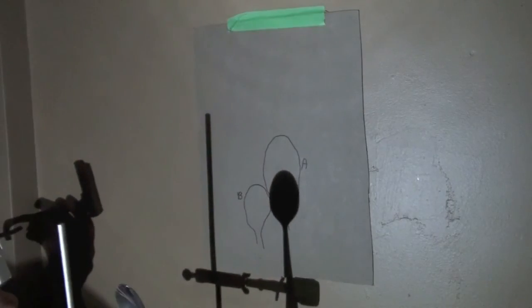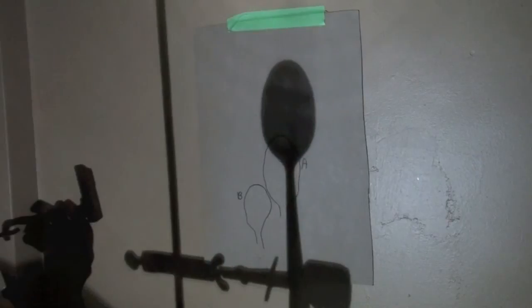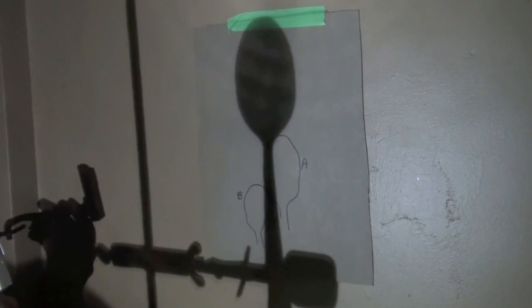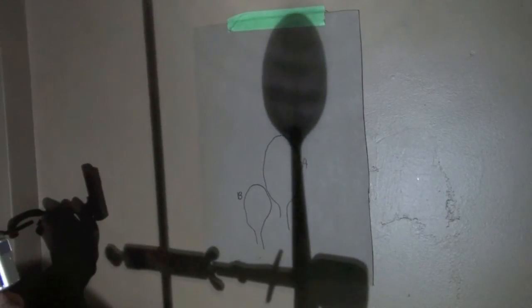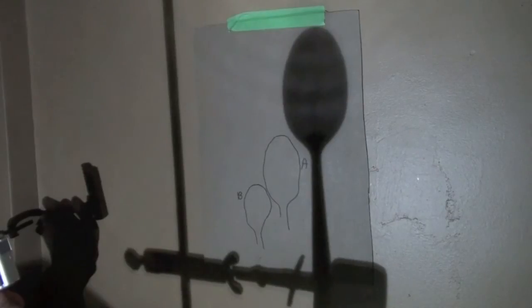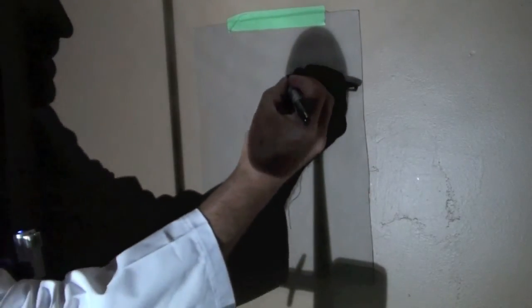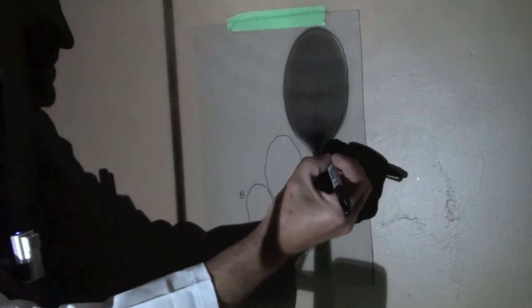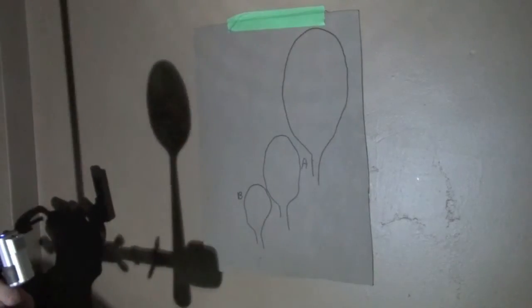Now, we'll move our spoon closer to the light source. And I will make another tracing right there. So we'll just trace the outside of the shadow. And that will be C.